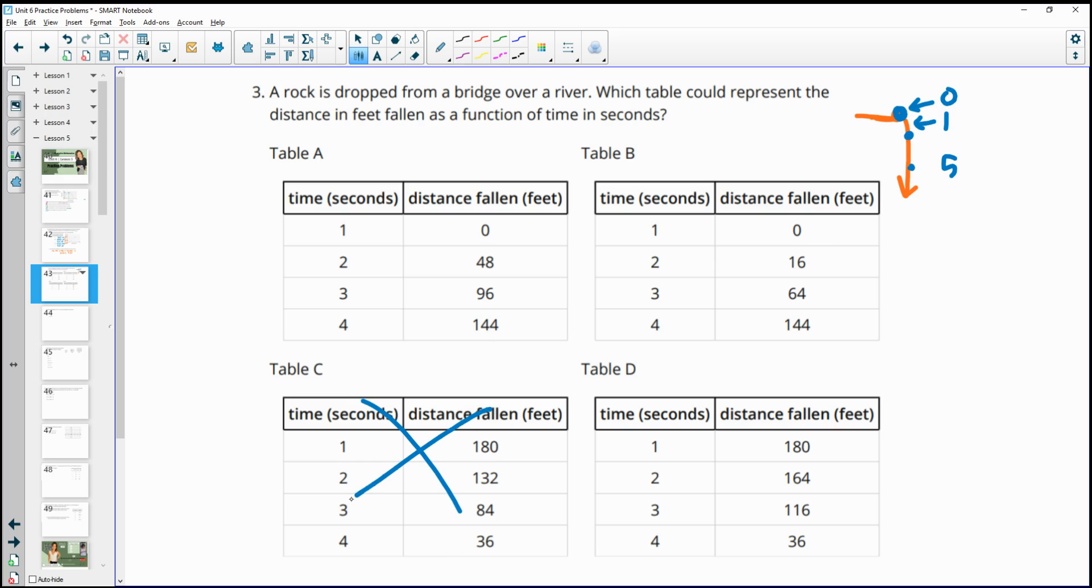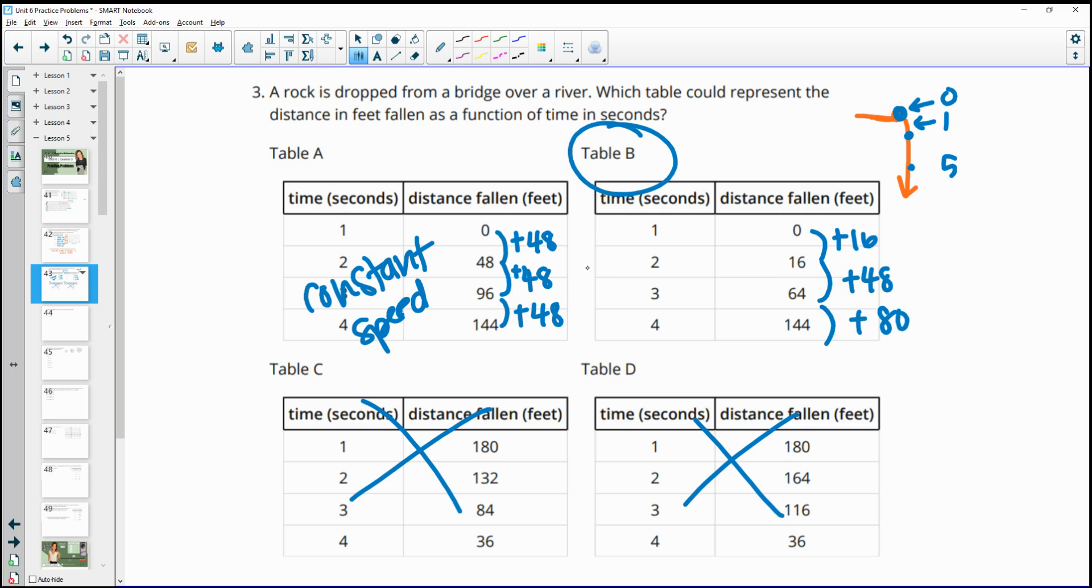The distance fallen after 1 second isn't going to be 180, so we can rule those out. We know as we drop something that gravity takes over and it's going to drop faster and faster as it goes. So it's not going to stay at a constant speed. Here, after 1 second it's moved 48 and then gone up another 48 and another 48. So this one's falling at a constant speed, which isn't going to happen because gravity makes it go faster and faster. Here we have it going 16, then the gap becomes 48, then the next second it falls 80. So table B would be the most likely.